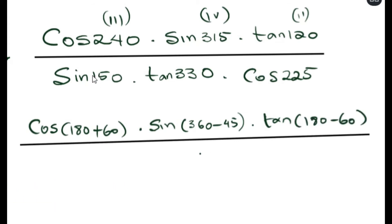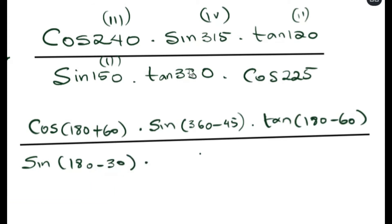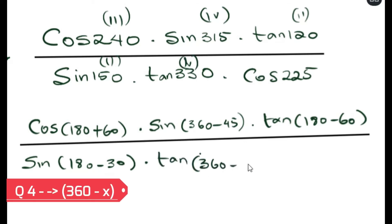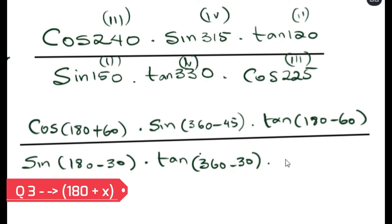For sine 150, since 150 is in the second quadrant, we rewrite it using the second quadrant equation. For cos 330, since 330 is in the fourth quadrant, we rewrite it using the fourth quadrant equation. Finally, cos 225 is in the third quadrant, so we rewrite it using the third quadrant equation.